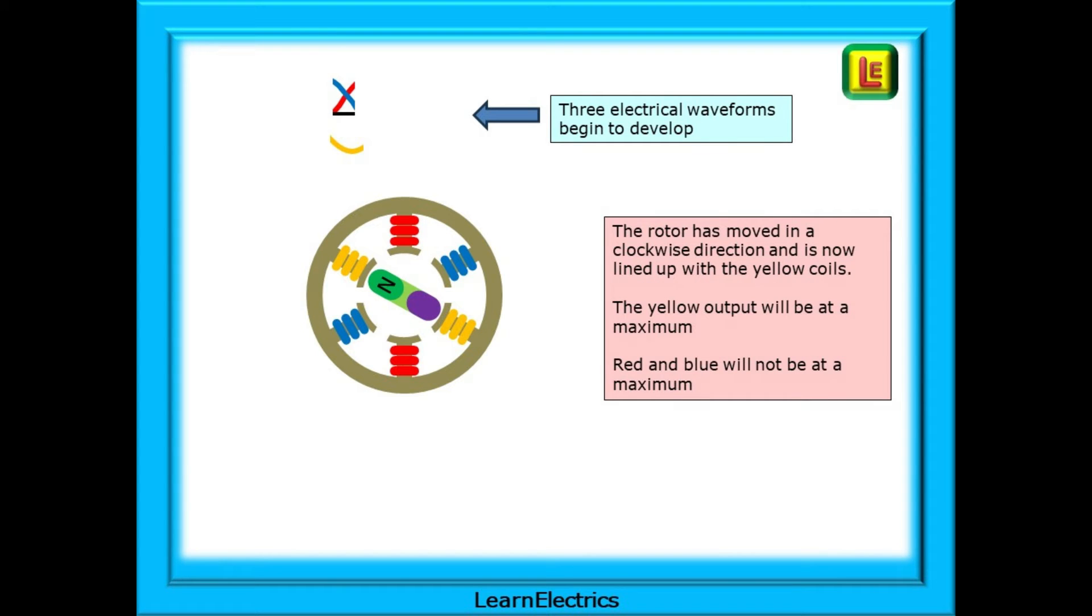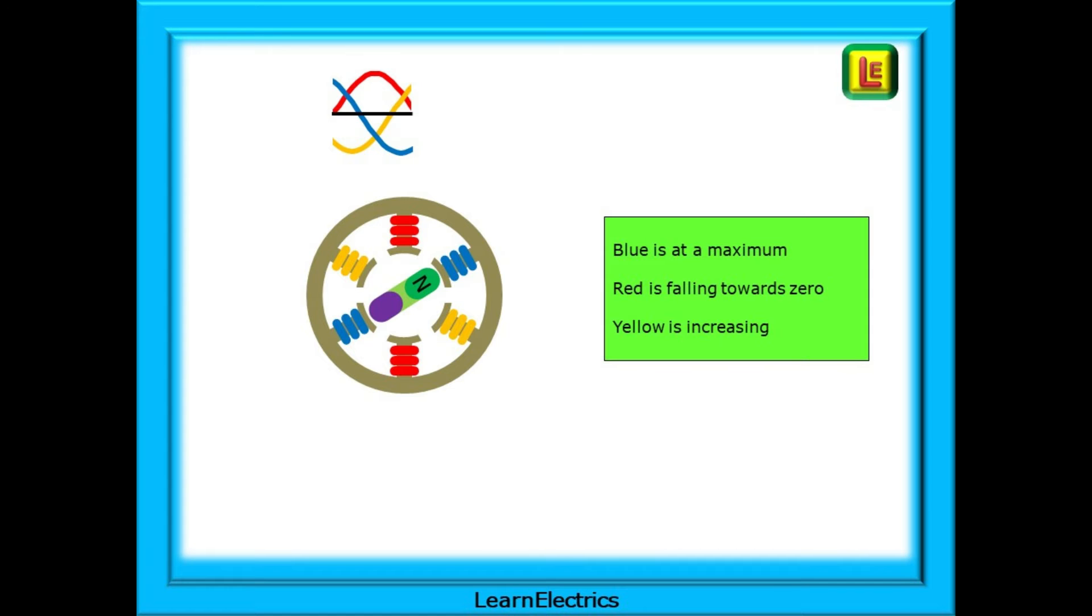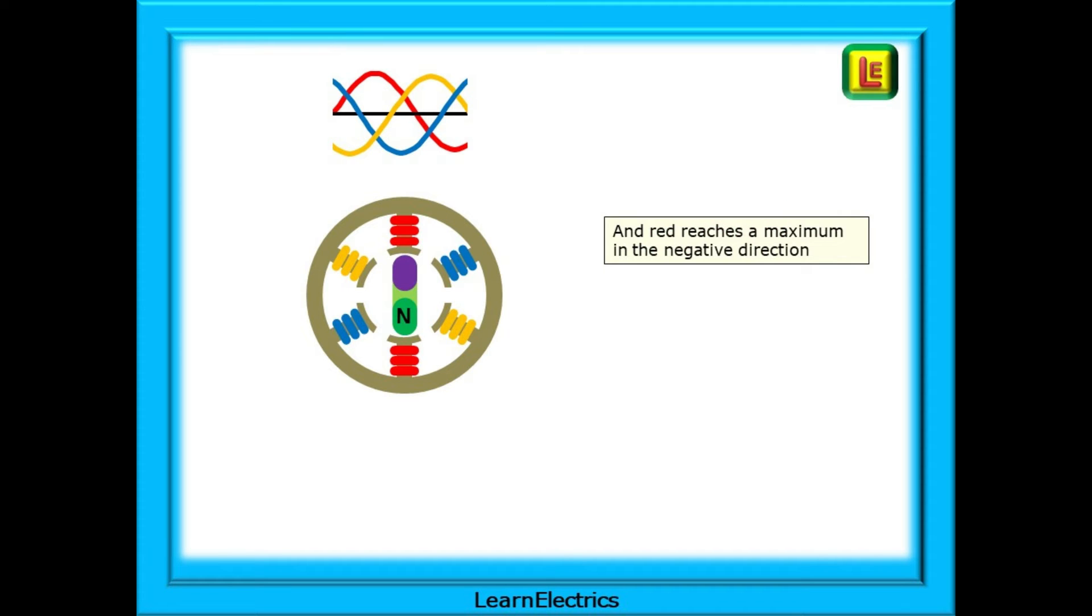The electrical waveforms begin to develop as the rotor rotates. The rotor has moved in a clockwise direction and is now lined up with the yellow coils. The yellow output will be at a maximum. Red and blue will not be at a maximum. Now the rotor is in line with the red coil. The magnetic flux is cutting across the red coils by its maximum amount. With maximum flux, we will have maximum voltage. But blue and yellow are not at a maximum. At this stage, blue is at a maximum. Red is falling towards zero and yellow is increasing. Yellow reaches its maximum voltage as the rotor lines up with the coils. Blue and red are at some midpoint voltage. More rotation and red reaches a maximum in the negative direction.